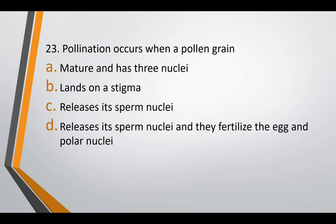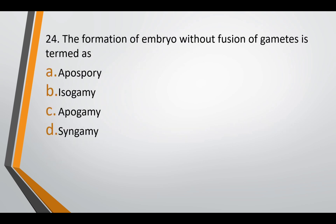Question twenty-three: pollination occurs when a pollen grain — matures and has 3 nuclei, lands on a stigma, releases its sperm nuclei, or releases its sperm nuclei and they fertilize the egg and polar nuclei. The correct answer is option B — when a pollen grain lands on a stigma. The process of pollination is defined as transfer from the anther until it lands on the stigma. Question twenty-four: the formation of embryo without fusion of gametes is termed as — apospory, isogamy, apogamy, or syngamy. The correct answer is option C — apogamy.